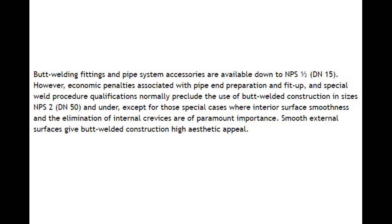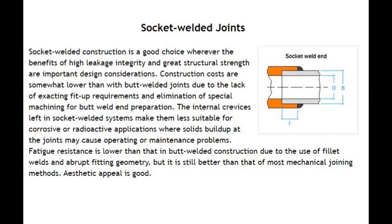Smooth external surfaces give butt welded construction high aesthetic appeal. Socket welded construction is a good choice wherever the benefits of high leakage integrity and great structural strength are important design considerations. Construction costs are somewhat lower than with butt welded joints due to the lack of exacting fit-up requirements and elimination of special machining for butt weld end preparation. The internal crevices left in socket welded systems make them less suitable for corrosive or radioactive applications. Fatigue resistance is lower than in butt welded construction due to the use of fillet welds and abrupt fitting geometry, but it is still better than that of most mechanical joining methods.